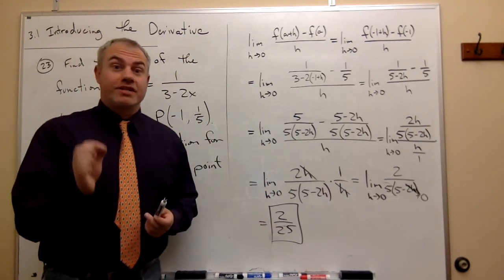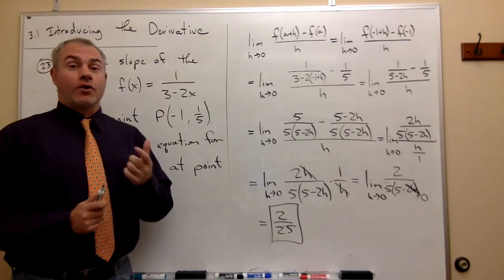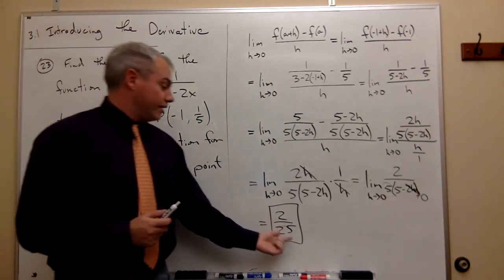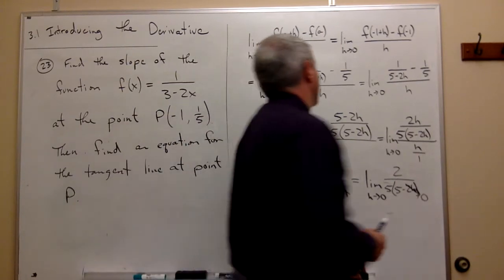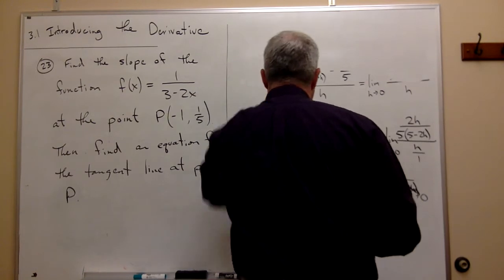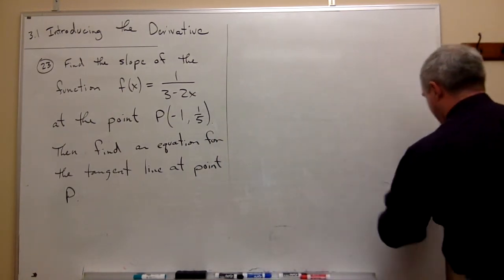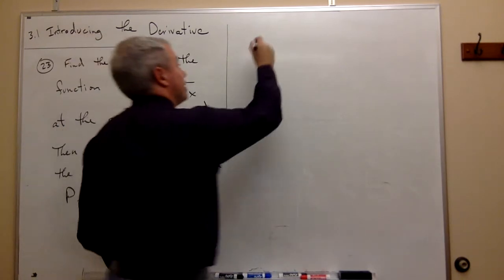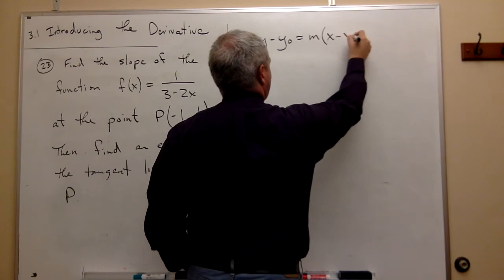Now let's use that information to get the equation of the tangent line at this point. I know a point on the line and I know the slope of the line, so I can combine those two things. I want to use the point-slope equation of a line, which is y minus y0 equals m times x minus x0.